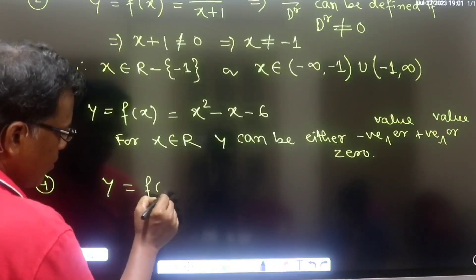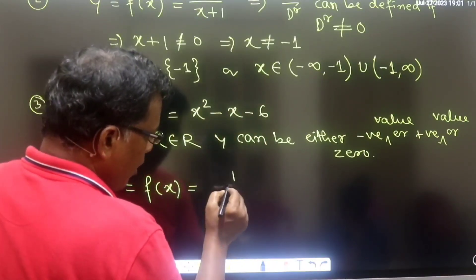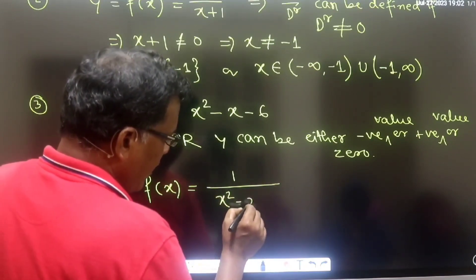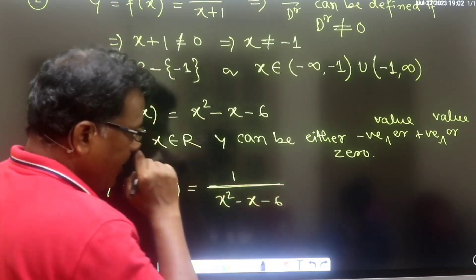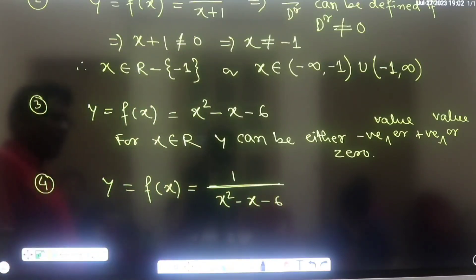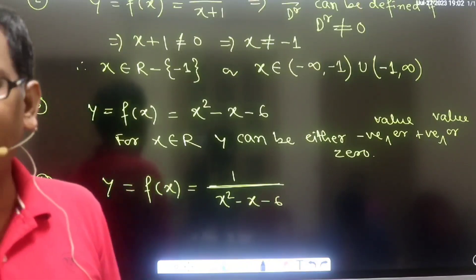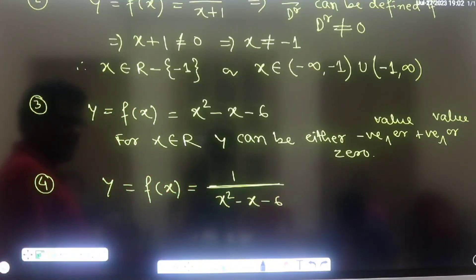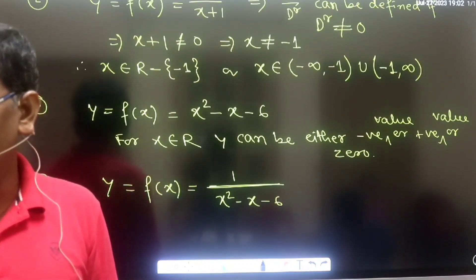Now suppose y = f(x) = 1/(x² − x − 6). This is the same quadratic, but now placed in the denominator. Can we say the domain is still all real values? No — because now the denominator must not be zero.